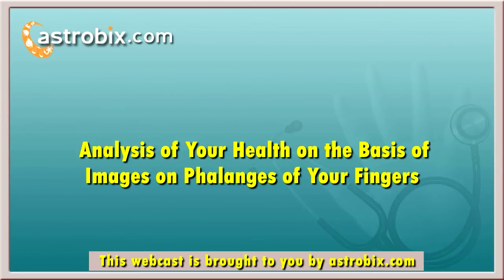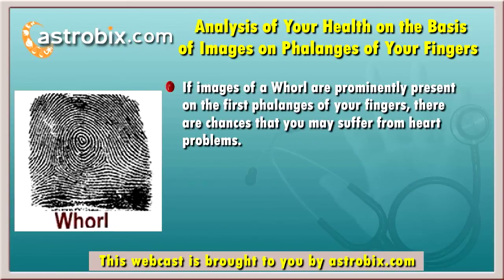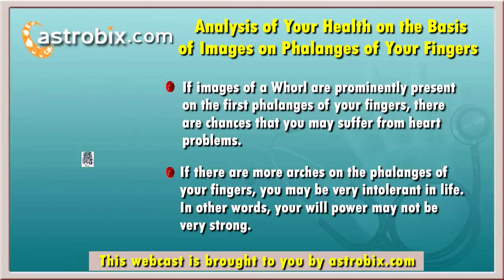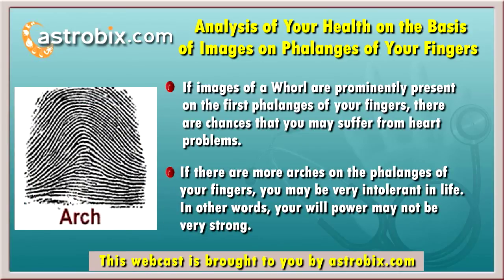In the second slide of this webcast, we will talk about phalanges of your fingers. We will tell you what kind of information certain images on your phalanges provide about your health. If you can see images of whorls on the first phalanges of your fingers, it is possible that you may suffer from heart diseases. If there are a lot of arches on the phalanges of your fingers, your willpower will not be very strong.